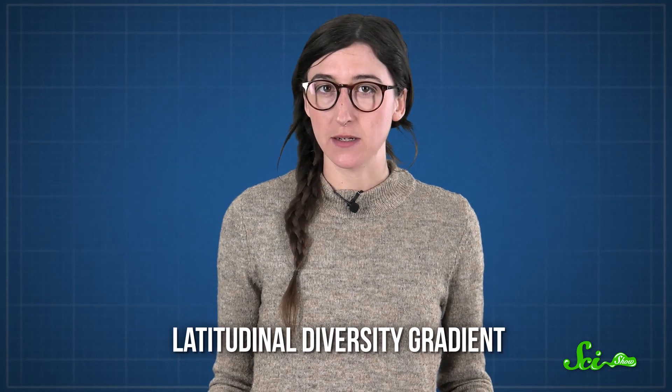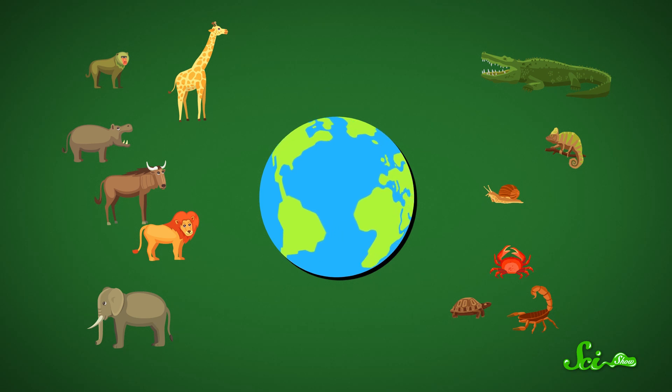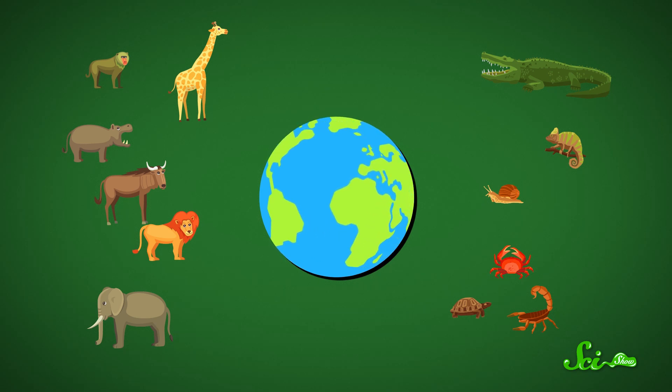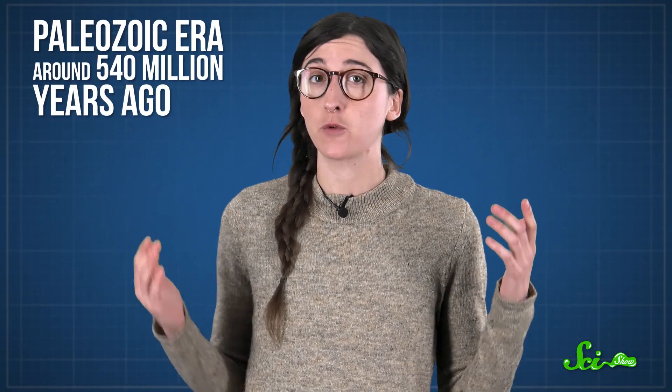This pattern of lots of biodiversity at the equator but less as you move towards the poles is called the latitudinal diversity gradient. It's true for both the northern and southern hemispheres, warm and cold-blooded animals, land and ocean ecosystems, and all up and down the food chain. According to the fossil record, this gradient has existed to some degree since the Paleozoic era around 540 million years ago, when life was first colonizing land.